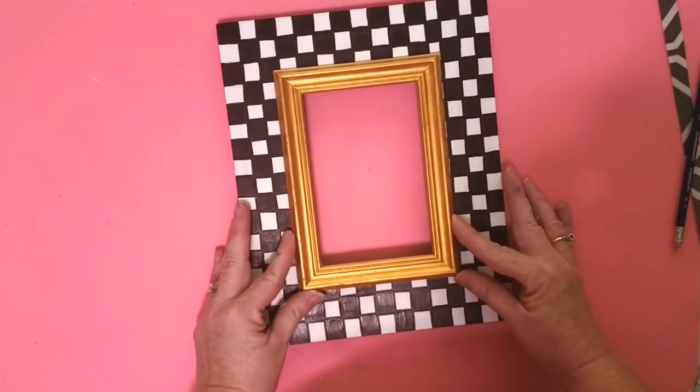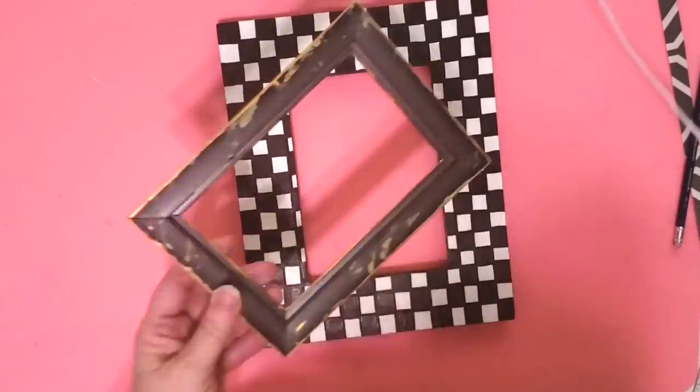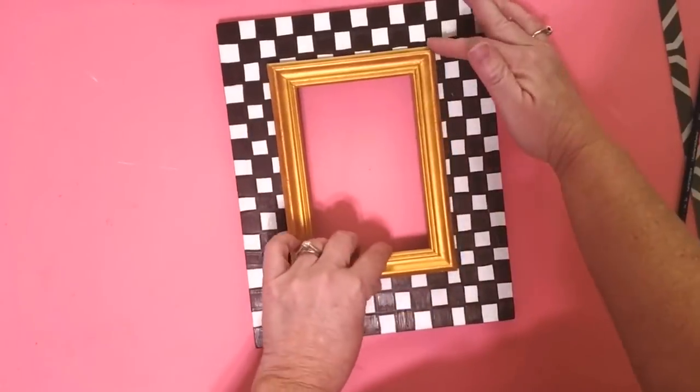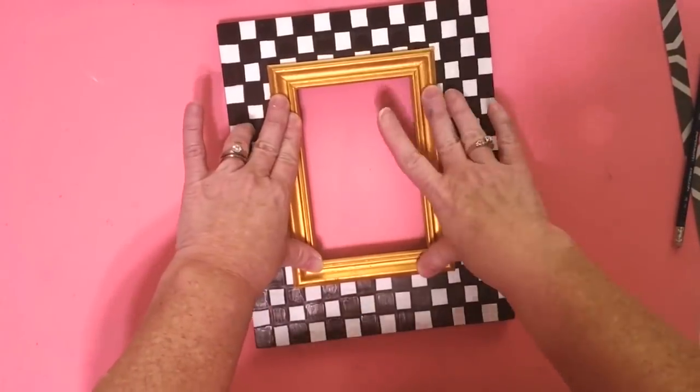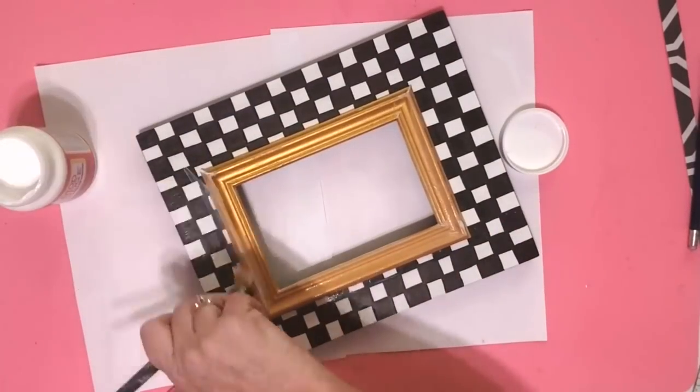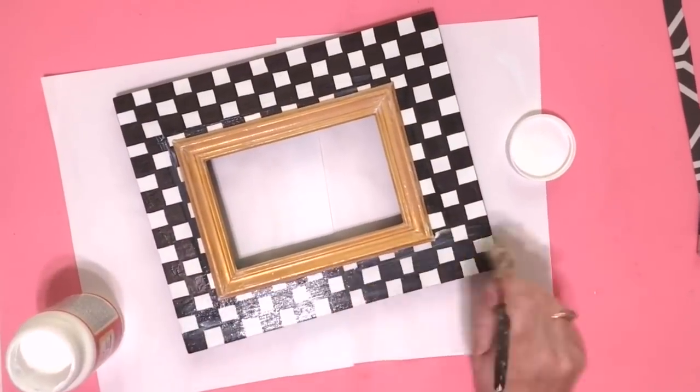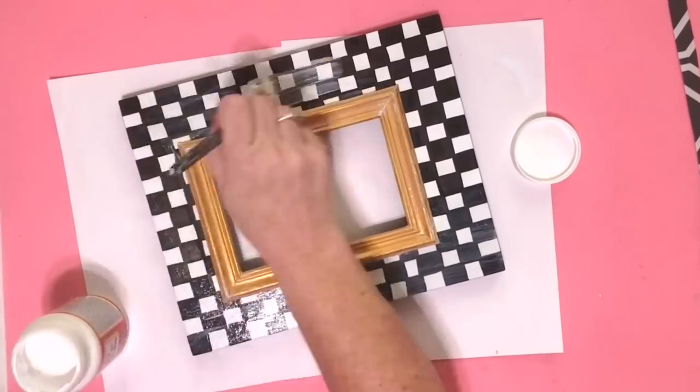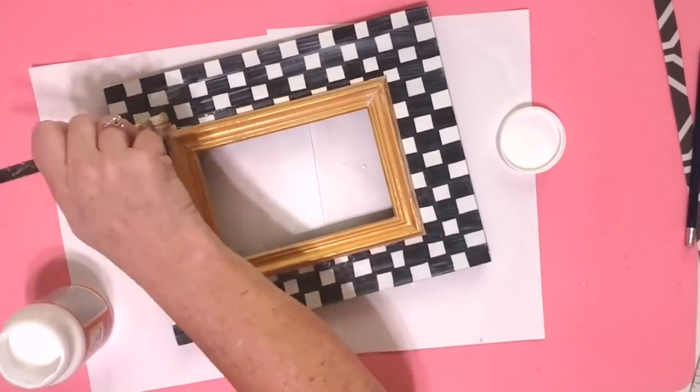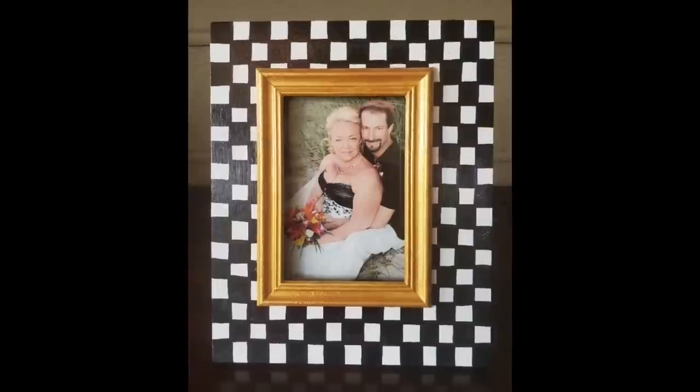Now we're going to attach our gold frame to our checked frame. So I'm just centering it up, making sure it fits right and then I use my glue gun and put a lot of hot glue on there and glue it right down. Now I'm going to take my Mod Podge. I am using the glossy Mod Podge and I'm going to give this a really good coat. This does two things. It protects my paint but it also gives it that glossy look like the porcelain one that is on the McKenzie Childs website. And there's our finished project.